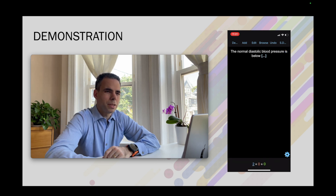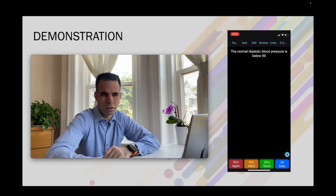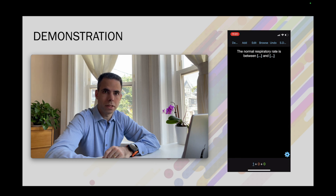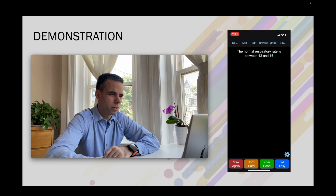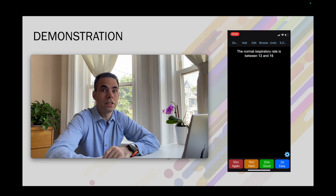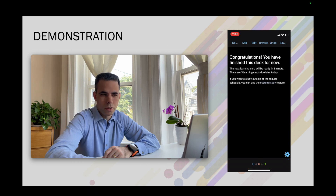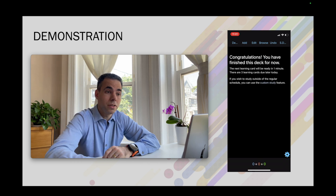The normal diastolic blood pressure is below — I'm not sure. I click the screen: it's 80. Since I didn't know that well, I click the red button. The normal respiratory rate is between — I'm not sure either, so I click red as well. Now I'm done with my four cards. I'll wait a few minutes and then open the app again.